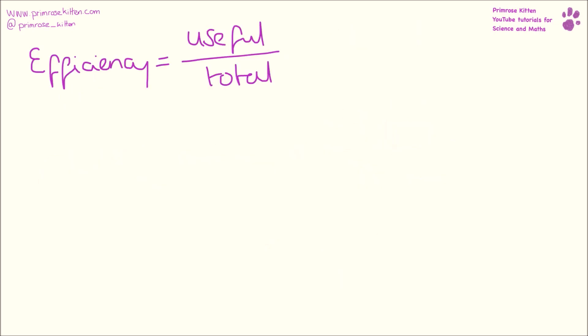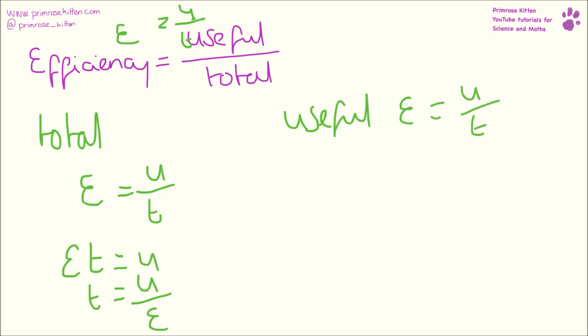Now, we need to be able to rearrange these equations to work out what total is and what useful is. If we're finding total: efficiency equals useful over total. To get total to the other side, we times it, so efficiency times total equals useful. Then, if we want to find total, we divide by efficiency, so total equals useful divided by efficiency. If we want to find useful: efficiency equals useful over total. We times by total, so efficiency times total equals useful.